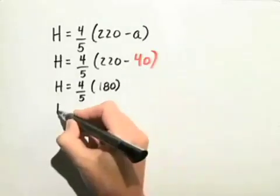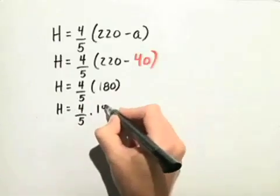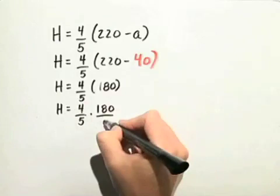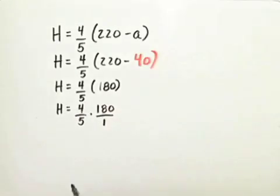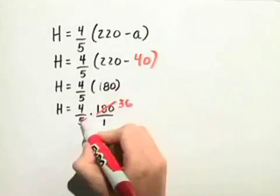So, H is equal to four-fifths times, let's write 180 as 180 over 1. Because 180 and 5 are both divisible by 5, we can write this as 36 and 1.